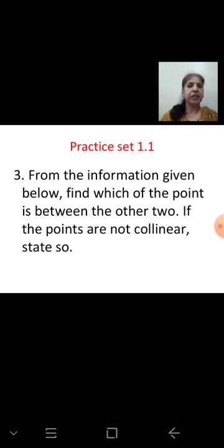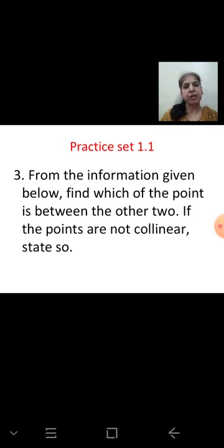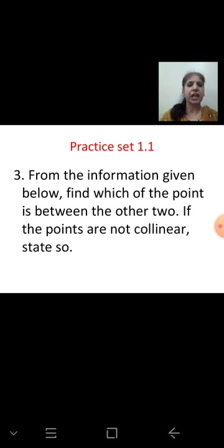Given three points, for example A, B, C, there are three possibilities — any one point can be between the other two. So here we also have to find if the points are collinear or not.